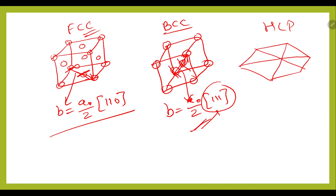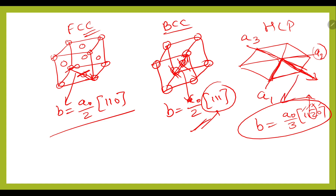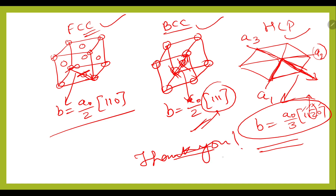In the case of HCP, the Burgers vector is shown using three directions A1, A2, and A3. The Burgers vector is (a₀/3)[112̄0]: moving 1 unit in A1, 1 unit in A2, and negative 2 units in A3. These are all the Burgers vectors associated with FCC, BCC, and HCP.